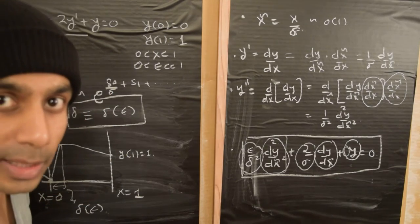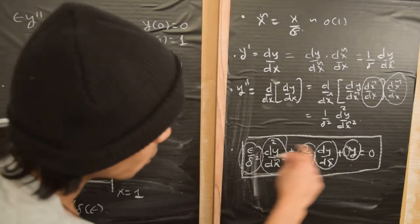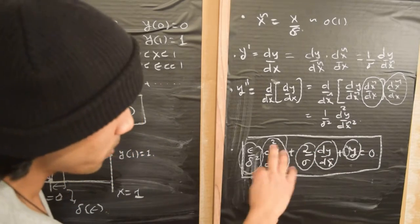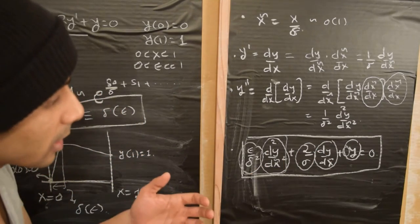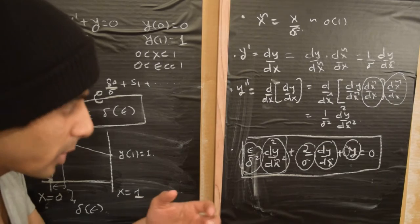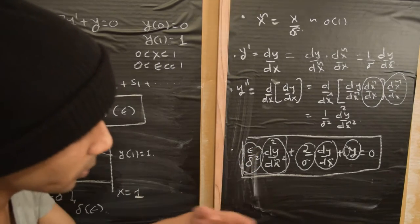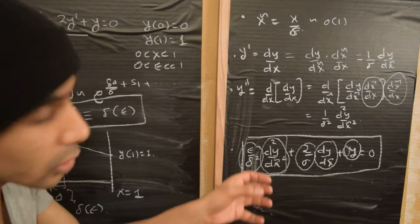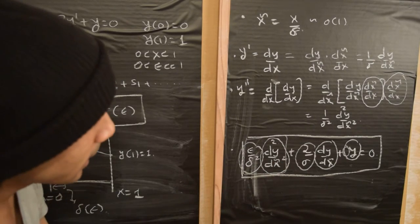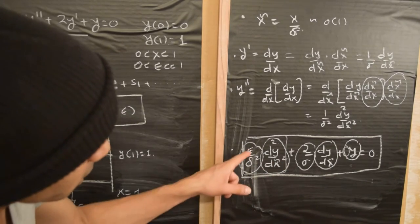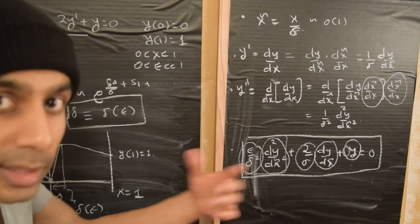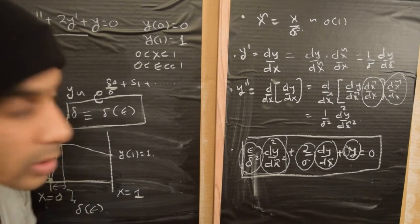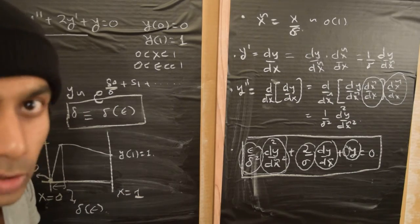Applying the method of dominant balance will give us a relation between epsilon and delta, and therefore tell us how delta depends upon epsilon. In general with three terms we have three possibilities, but we can already consider which to try.